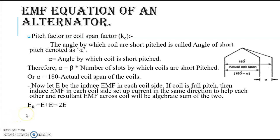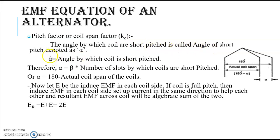Good afternoon everyone. In this lecture we will discuss the pitch factor or coil span factor. It is denoted by Kc. The pitch factor is the angle by which a coil is short pitched, called the angle of short pitch, and it is denoted as alpha.